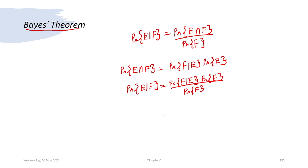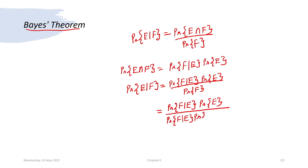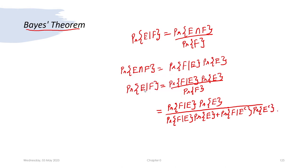As we had seen in the case of total probability, we can write the probability of F as probability of F given E times probability of E, divided by probability of F given E times probability of E plus probability of F given E complement times probability of E complement. I will continue Bayes theorem on the next slide.